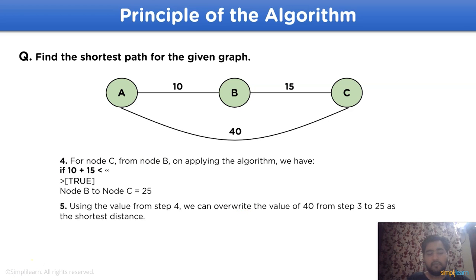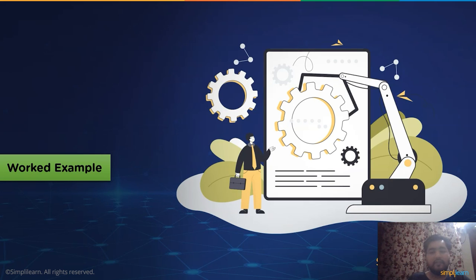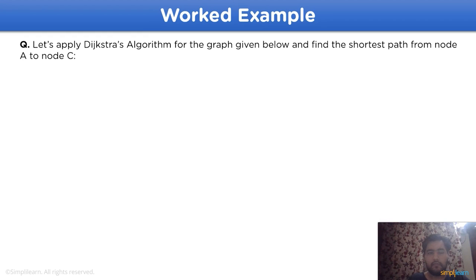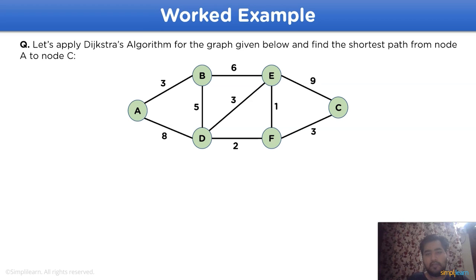Without further ado, let's move on to the solved example using Dijkstra's algorithm. According to the given question, we have to use Dijkstra's algorithm for the given graph and find the shortest path from node a to node c. We need to find only the shortest distance between node a and node c. Now let's take a look at the graph, with node a as the current node and node c as the targeted node.